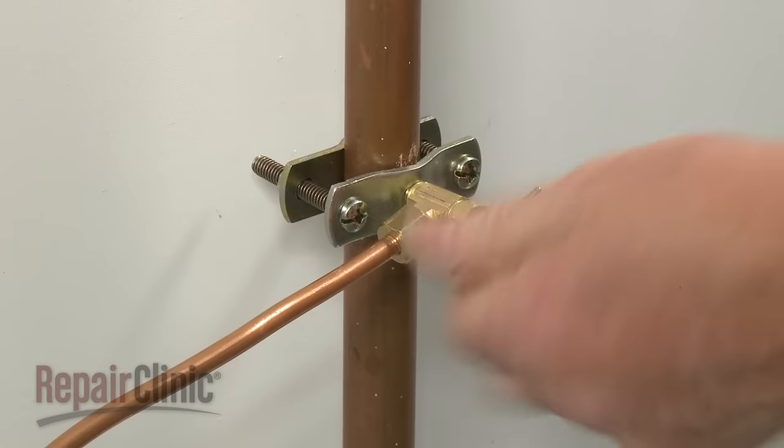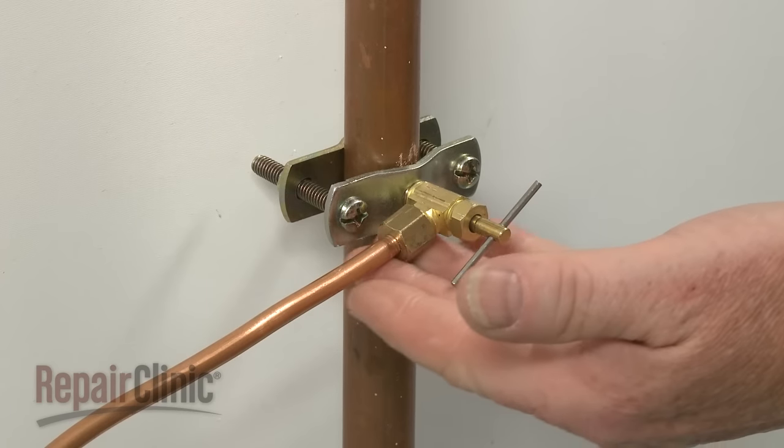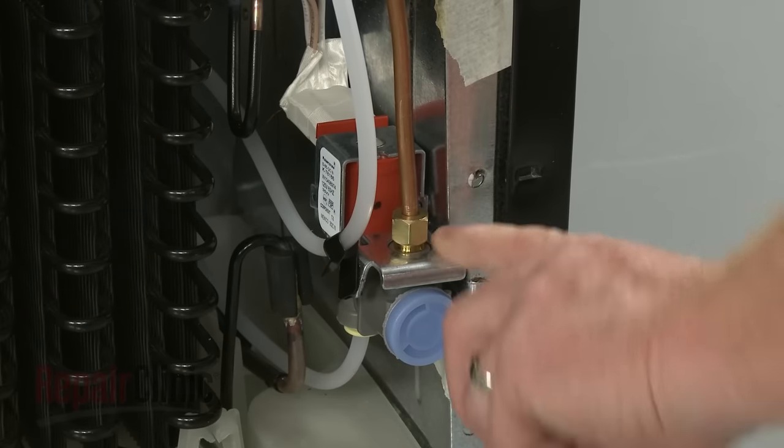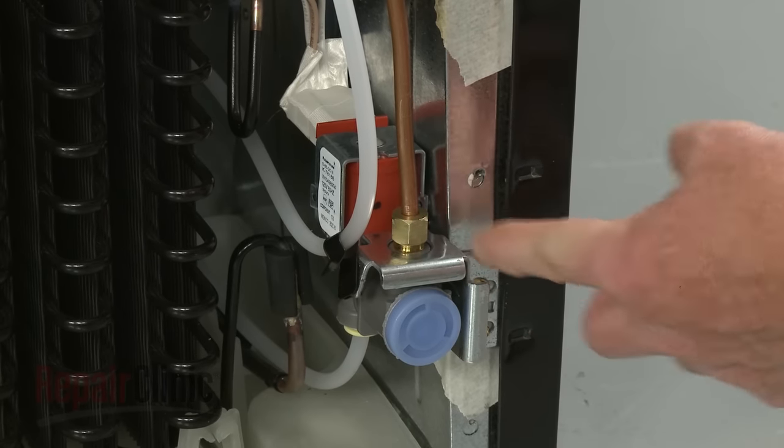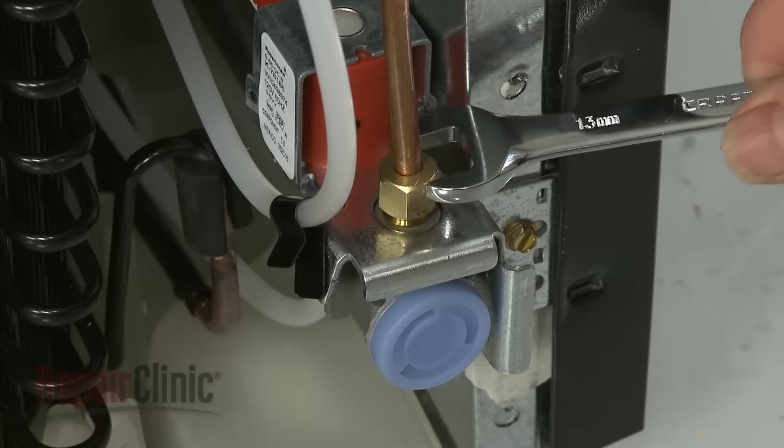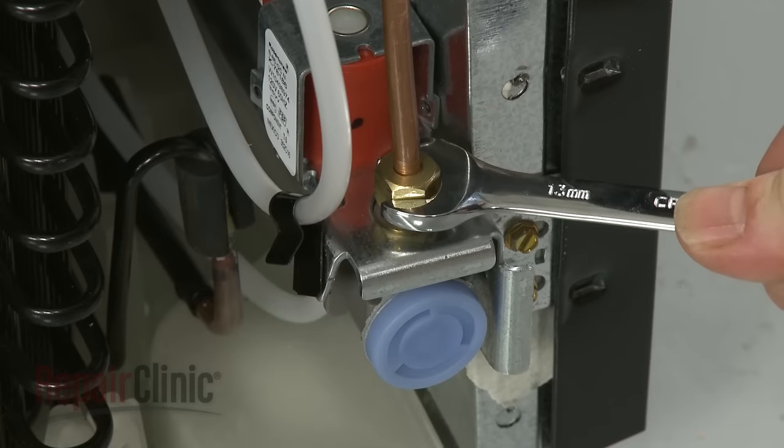Open the shut-off valve again and check both the shut-off valve and the water inlet valve for leakage. If any leaks appear, you can tighten the compression nut in small increments until the leakage stops.